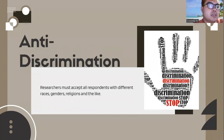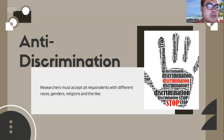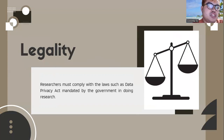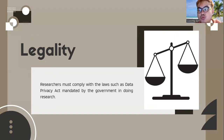When we say anti-discrimination, researchers must accept all respondents regardless of different aspects like race, gender, religion, and status of life. When we say legality, researchers must comply with the laws mandated by the government, such as data privacy and anti-plagiarism laws. We need to know how to follow the laws of the government, especially those related to research.